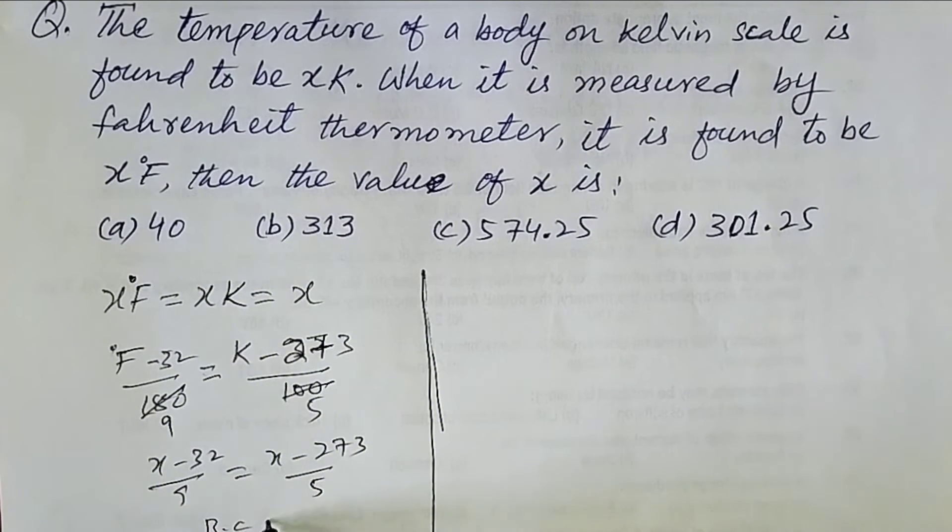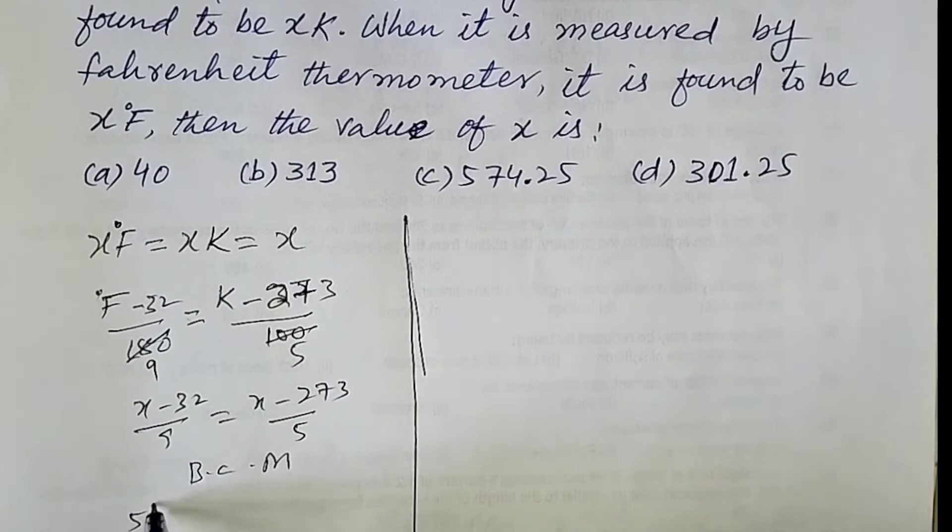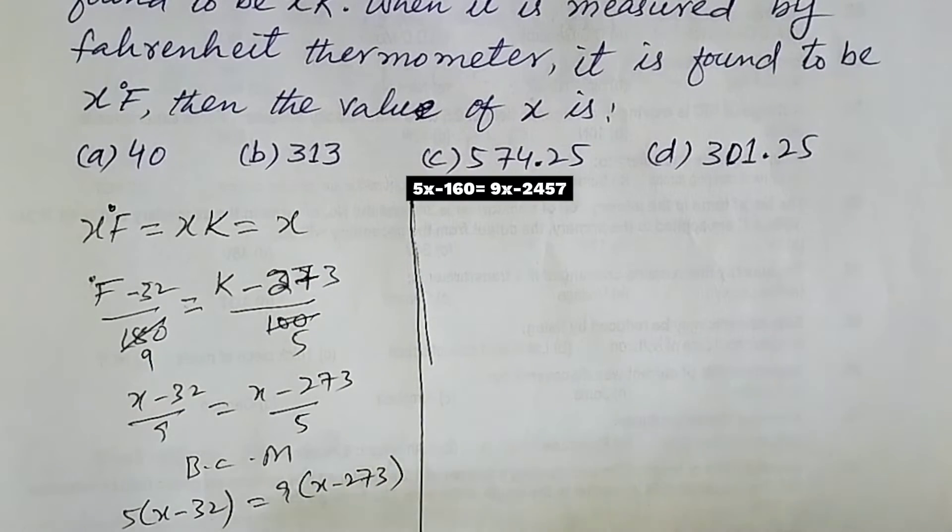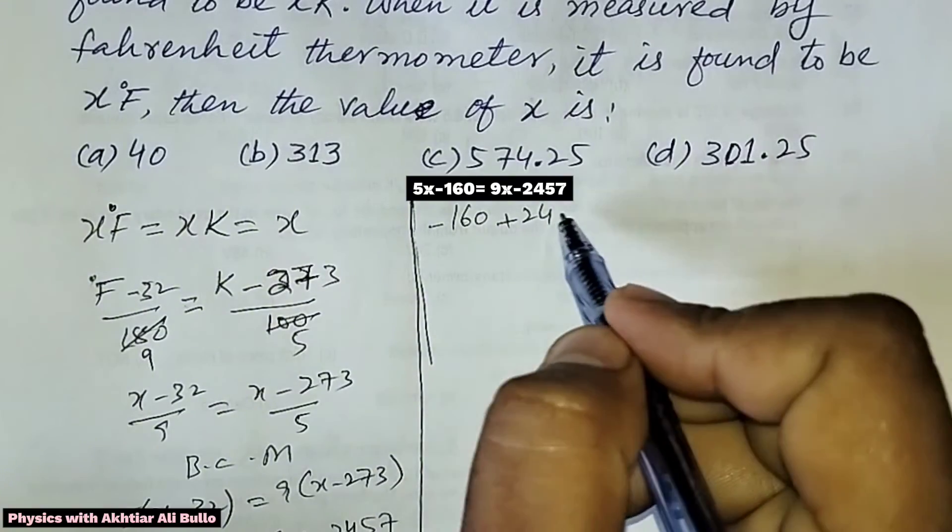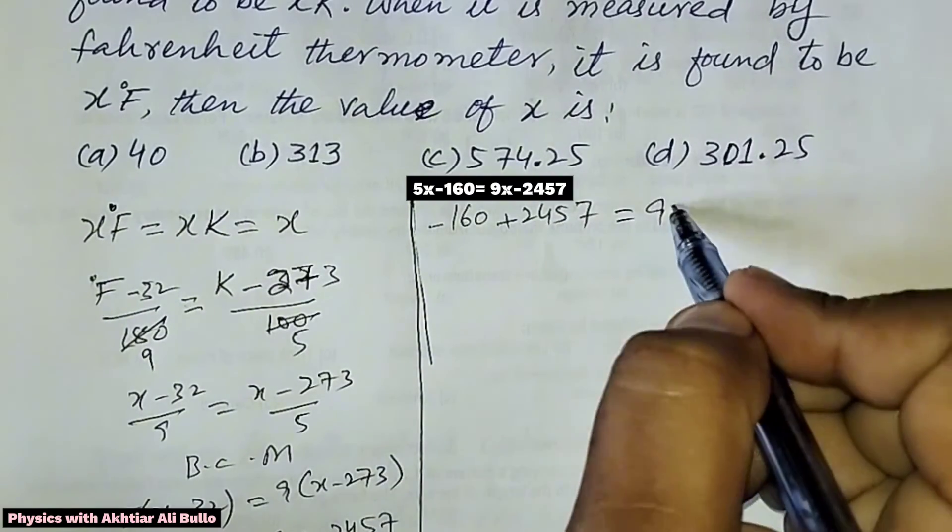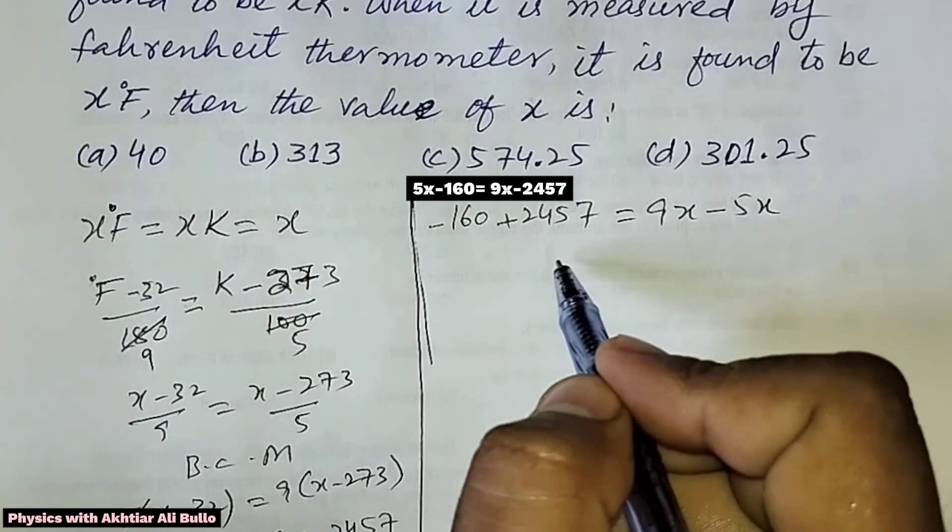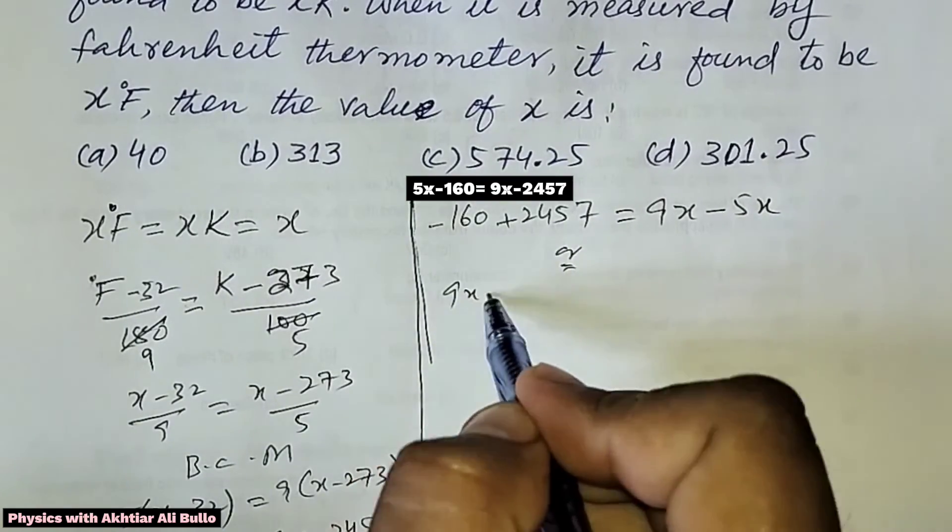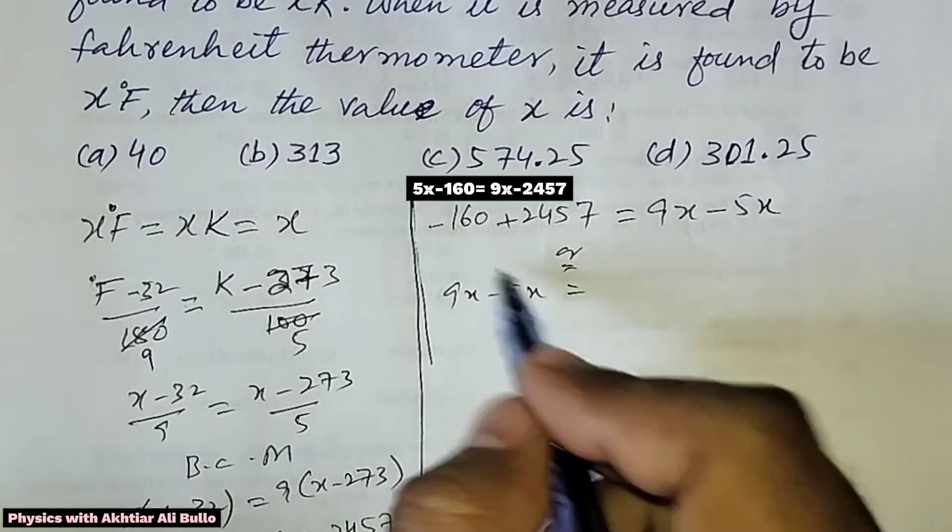By cross multiplication: 5(x - 32) equals 9(x - 273). Expanding: 5x - 160 equals 9x - 2457. Rearranging: -160 + 2457 equals 9x - 5x, or 9x - 5x equals -160 + 2457.